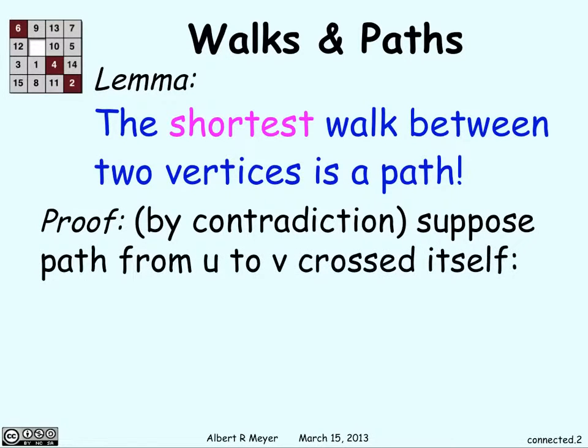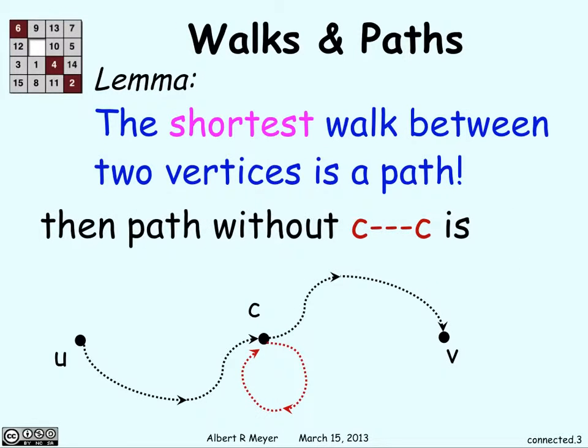So suppose we have some path from u to v, and it crosses over itself. Here we have u and v, and at some point you get to c, and you go back to c, and from there you go to v. So you've gone through some vertex c twice. But if you want to get the shortest path from u to v, why would you go through this loop? Why not just keep going straight from c to v?